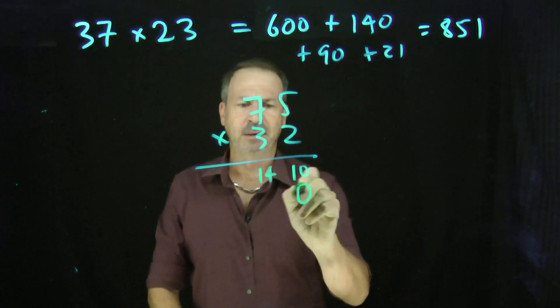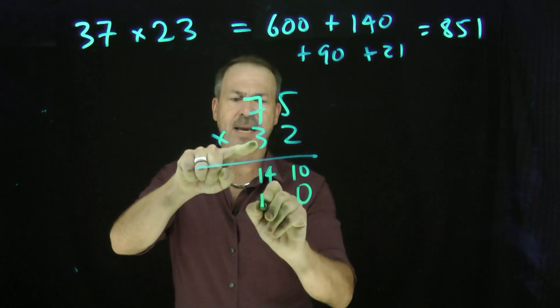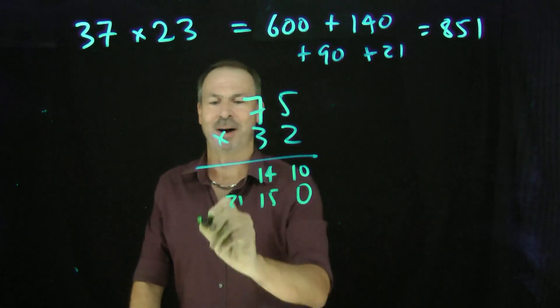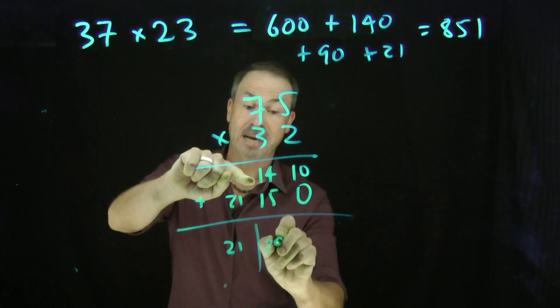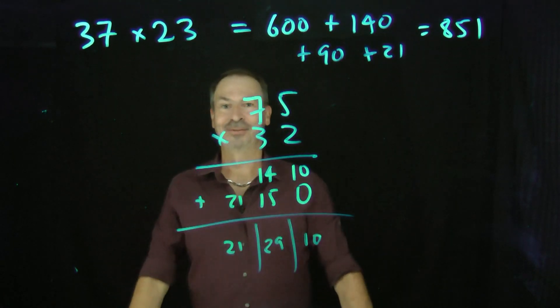Okay. Bring a little 0 here. 3 times 5 is 15. Just write 15. 3 times 7 is 21. Just write 21. And then add those. So I'll get 21, 29, 10. Okay.